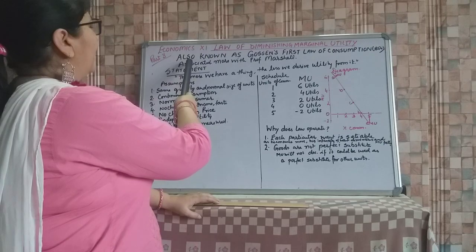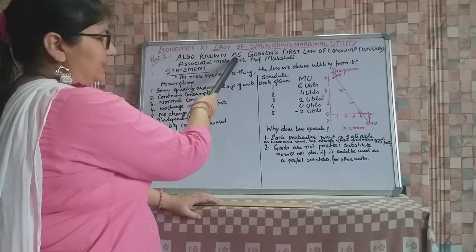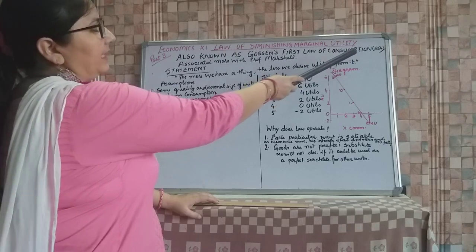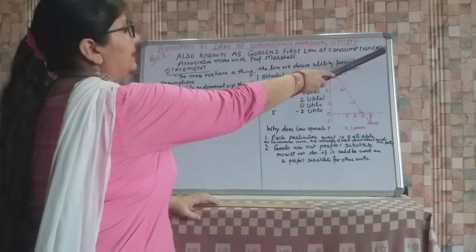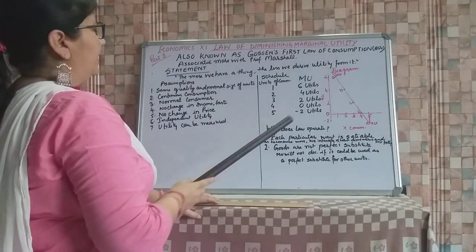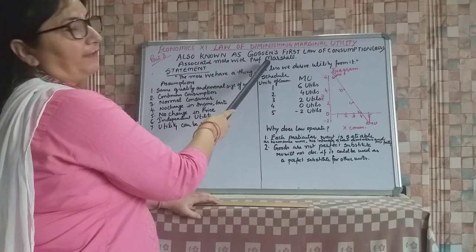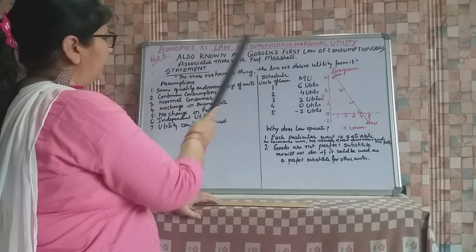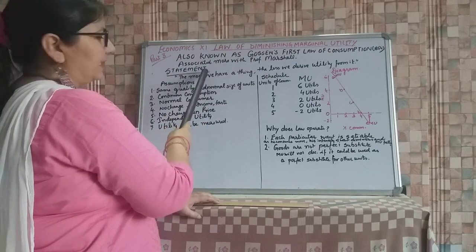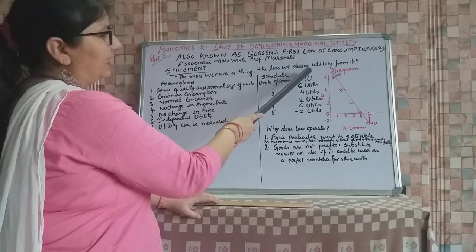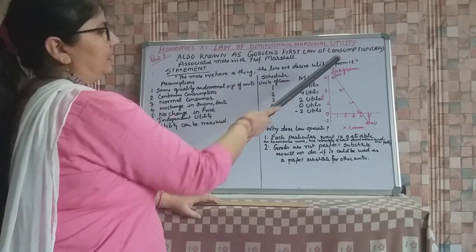It is also known as Gawson's first law of consumption. It was developed in 1854 but is associated more with Professor Marshall. The statement says, the more we have a thing, the less we derive utility from it.